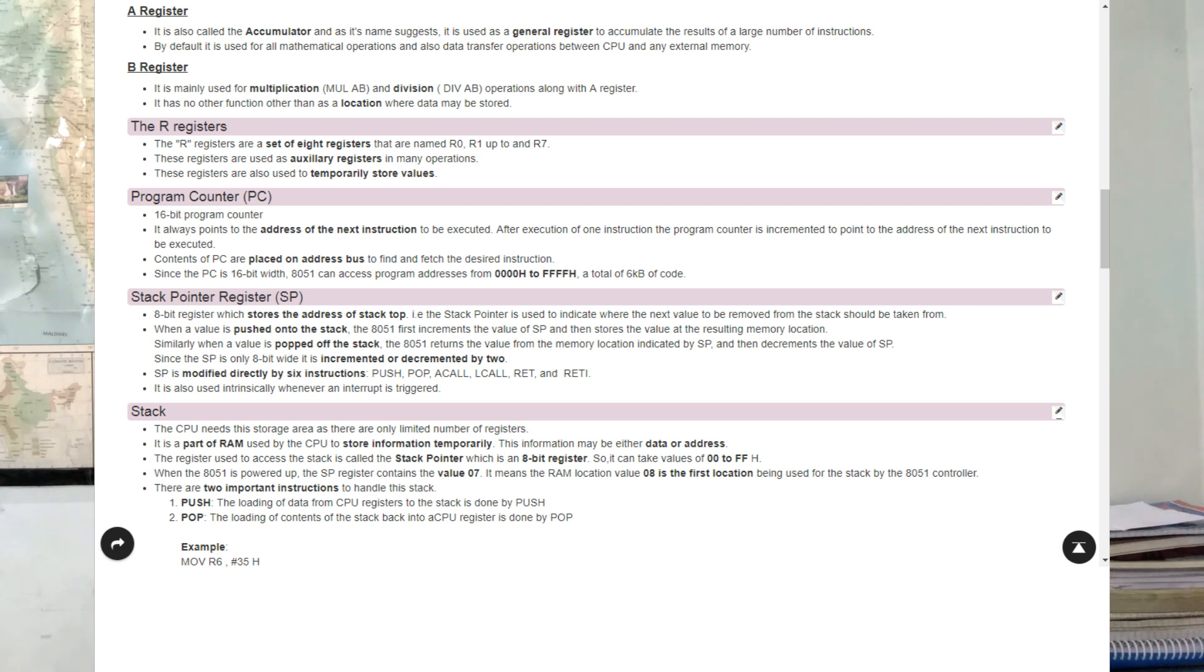Accumulator register: It is also an 8-bit register. It is used to store the result of arithmetic and logical operations performed by your CPU. Next register, B register which is used to store the result of multiplication and division operations.